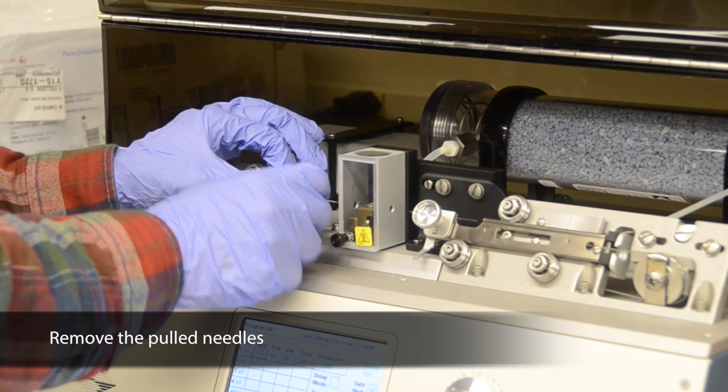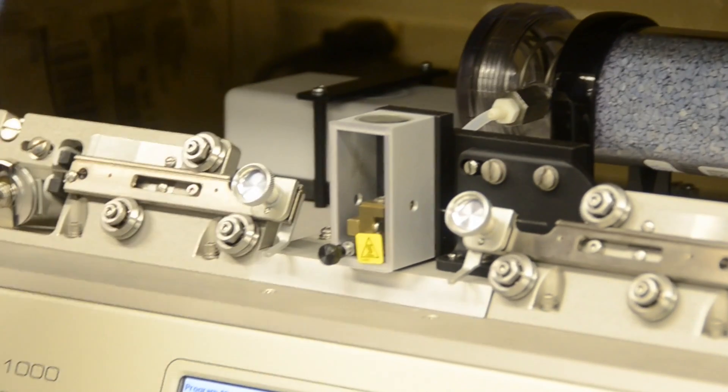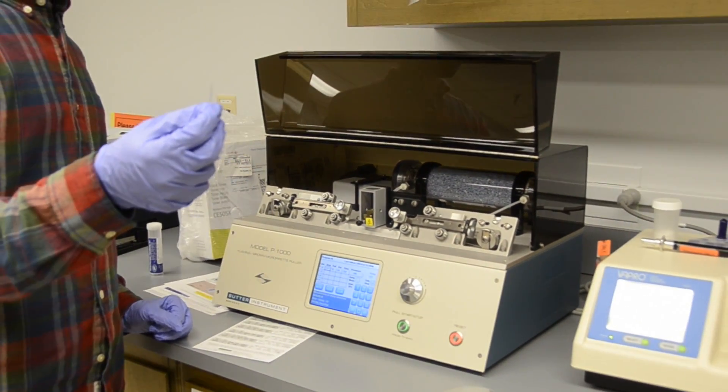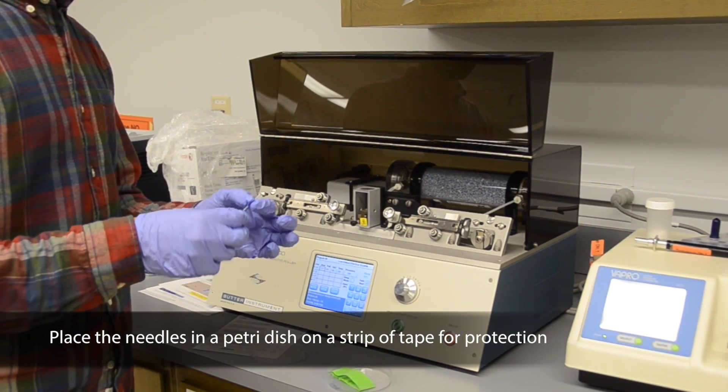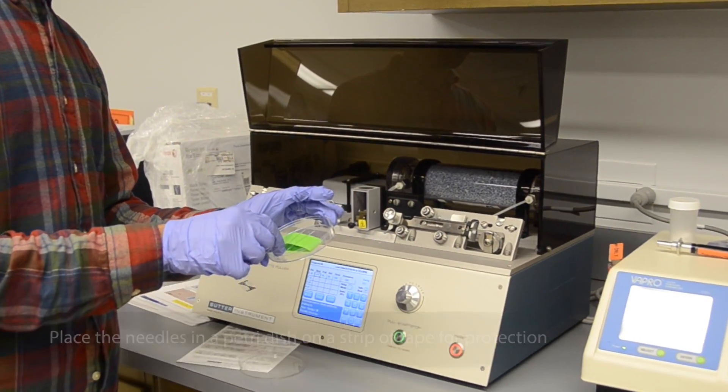Carefully unscrew the capillary tube holders and remove the pulled needles. Place the needles on the sticky side of a piece of tape in a petri dish. This will prevent the needle from breaking.